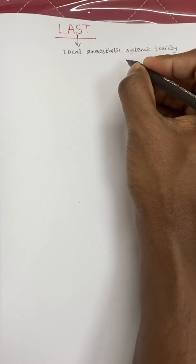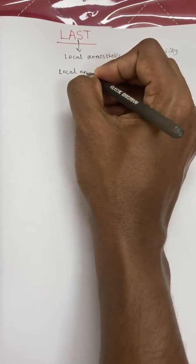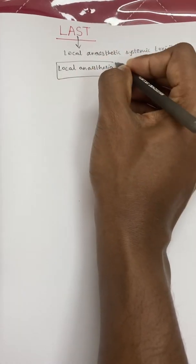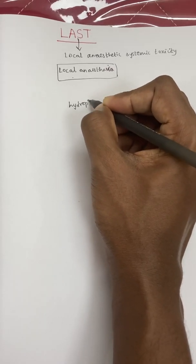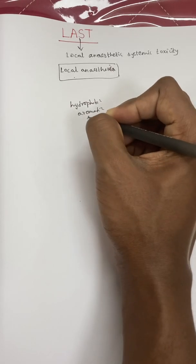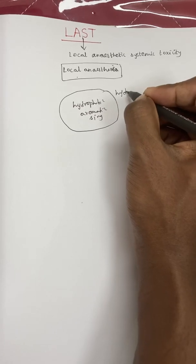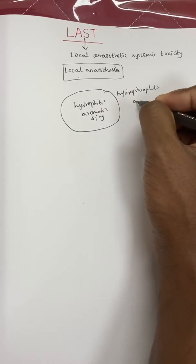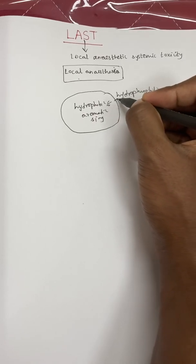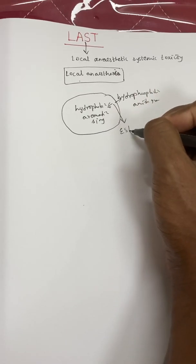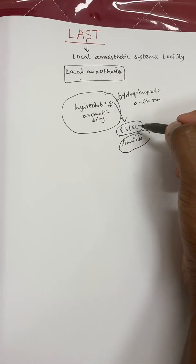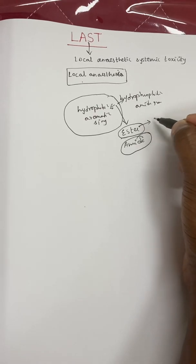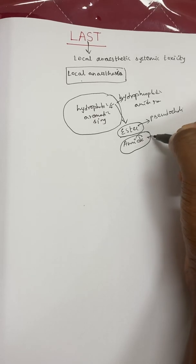Before going into the proper topic, I just want to discuss some basics of local anesthetics to get a better understanding. Local anesthetics used day-to-day in regional blocks have a hydrophobic aromatic ring surrounded by a hydrophilic amide group. These are attached by intermediates known as either esters or amides. Depending on this linkage, they are classified into ester-linked or amide-linked local anesthetics.